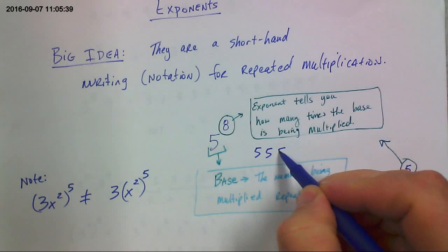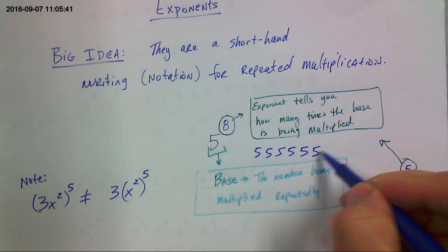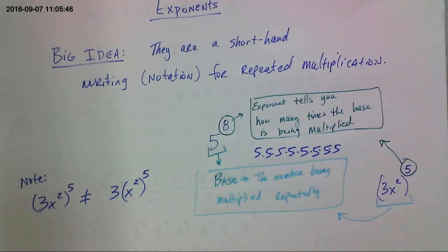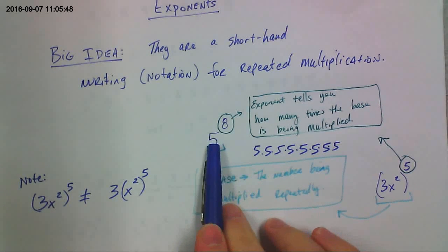3, 4, 5, 6, 7, 8, 5s, all multiplying. That's what that equals. You don't want to figure out what that number is. It's really big. So we write this instead.